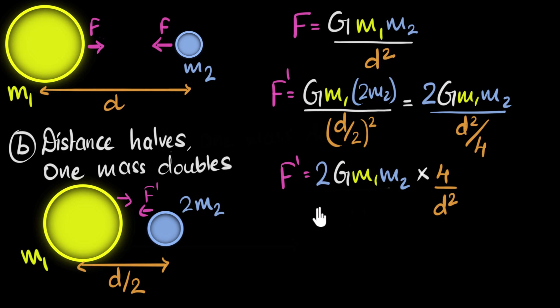What does that give us? Well, 2 times 4 is 8. So I end up with 8G M1 M2 by d squared.